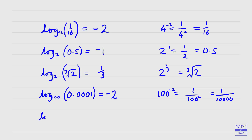Let's look at one more on this page — log to base 17 of 1. We're thinking: 17 to the power of something equals 1. That is going to be 0, because anything to the power of 0 is 1. So log to base 17 of 1 is equal to 0.